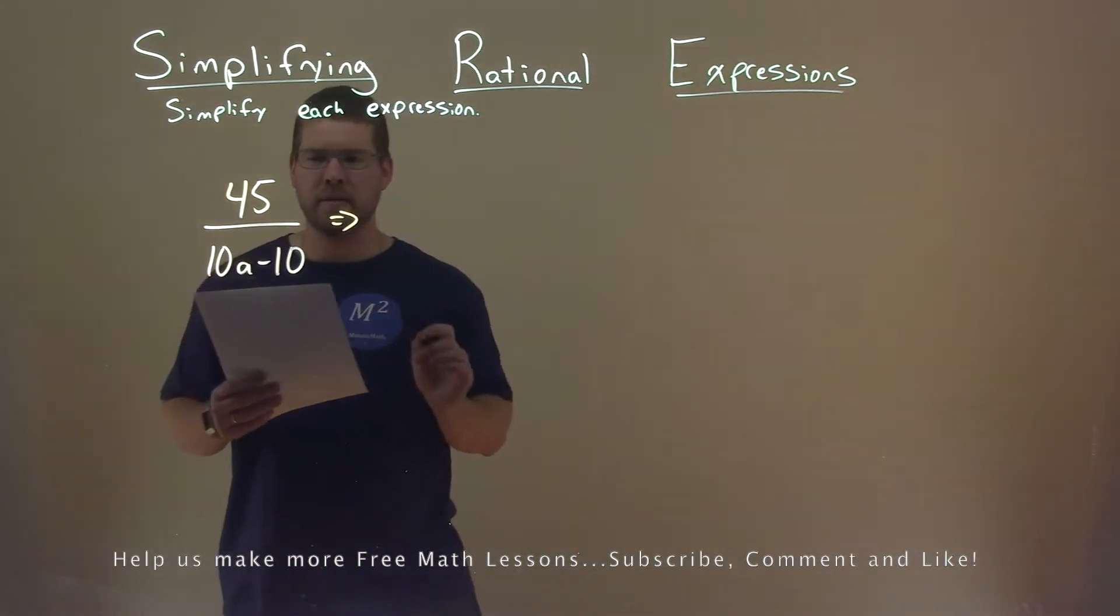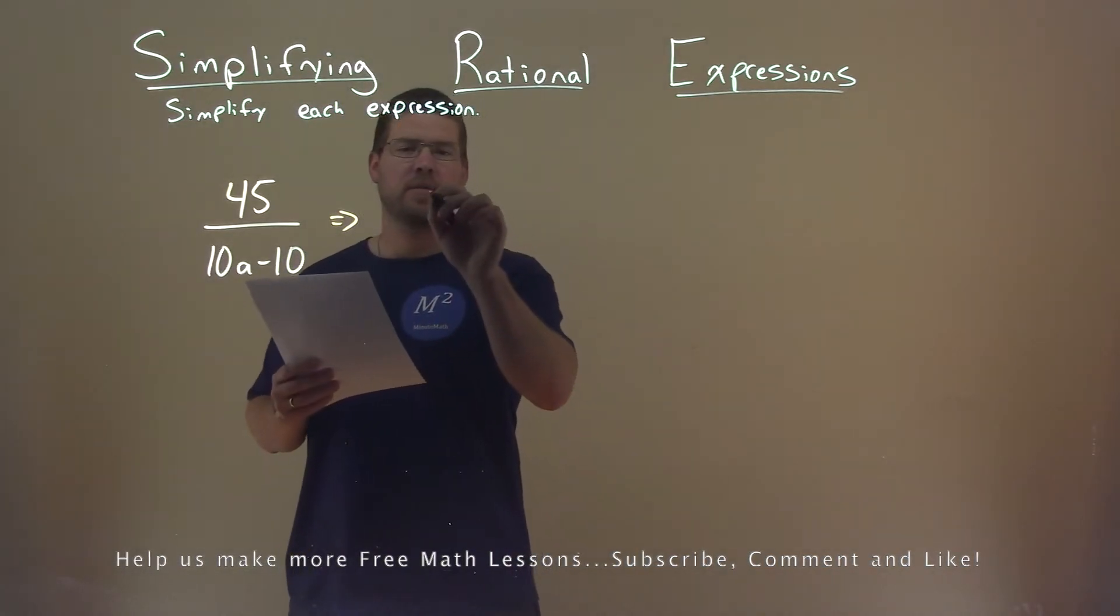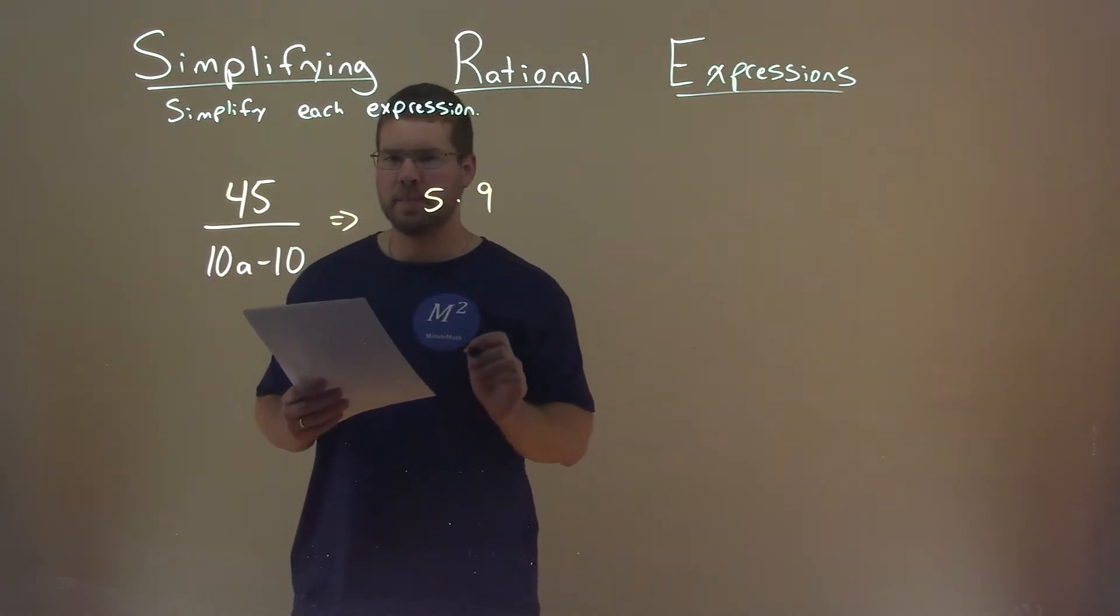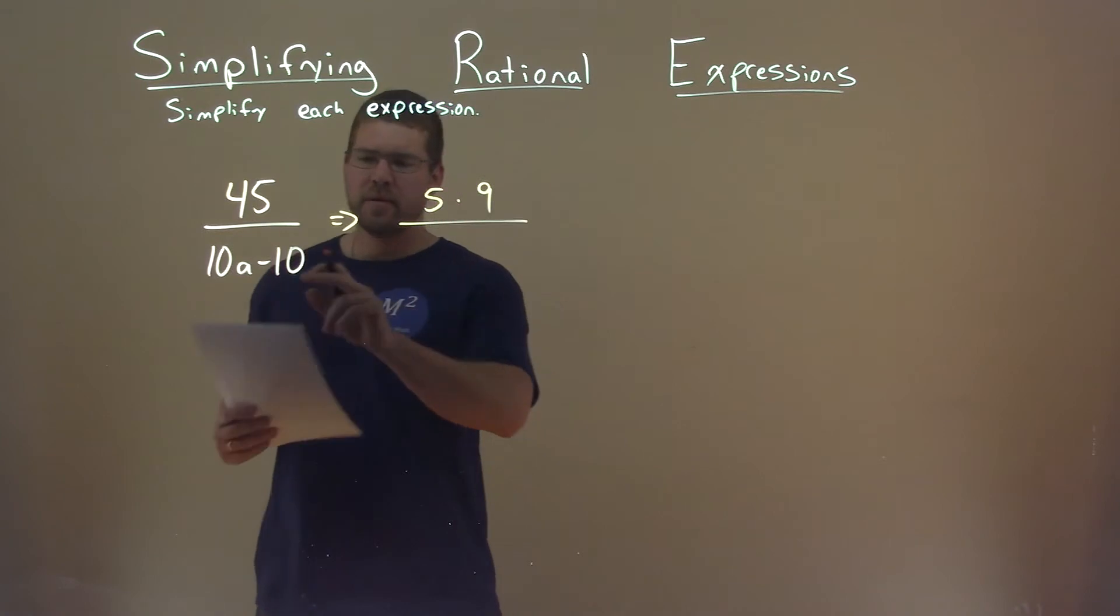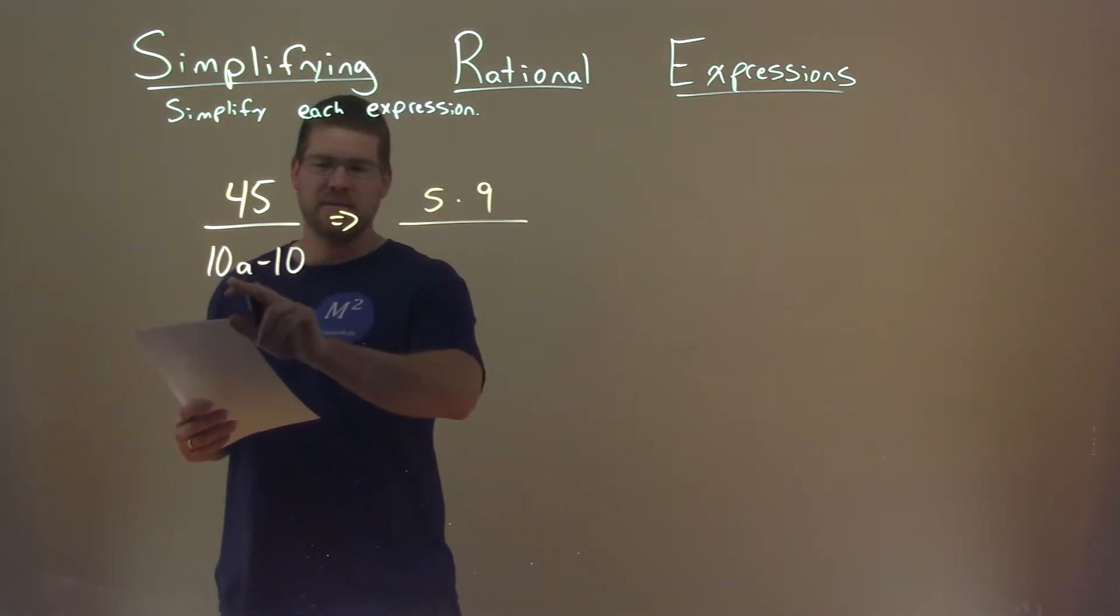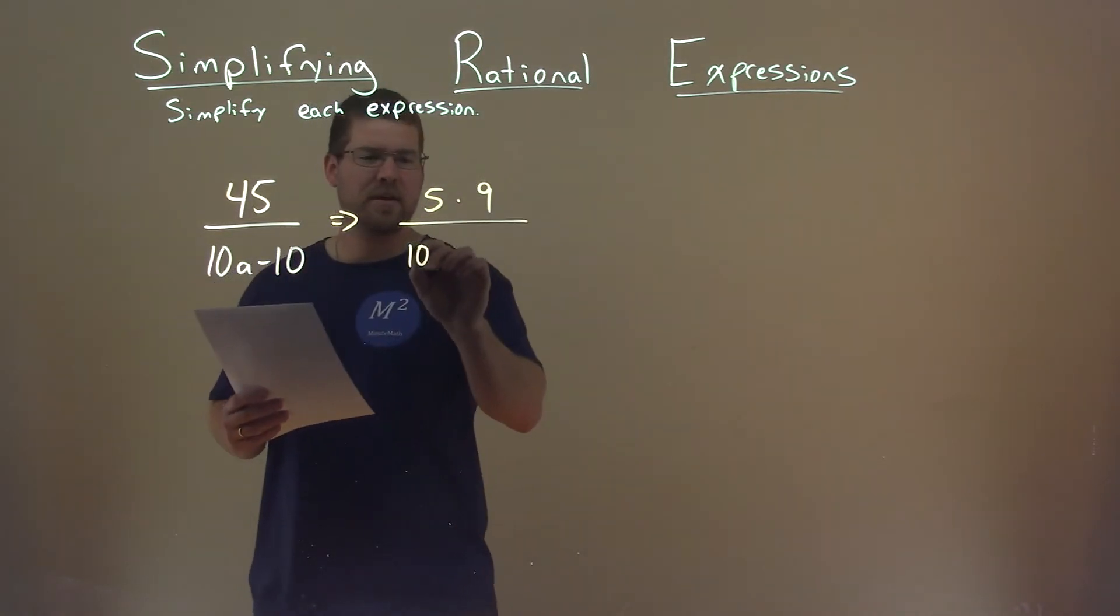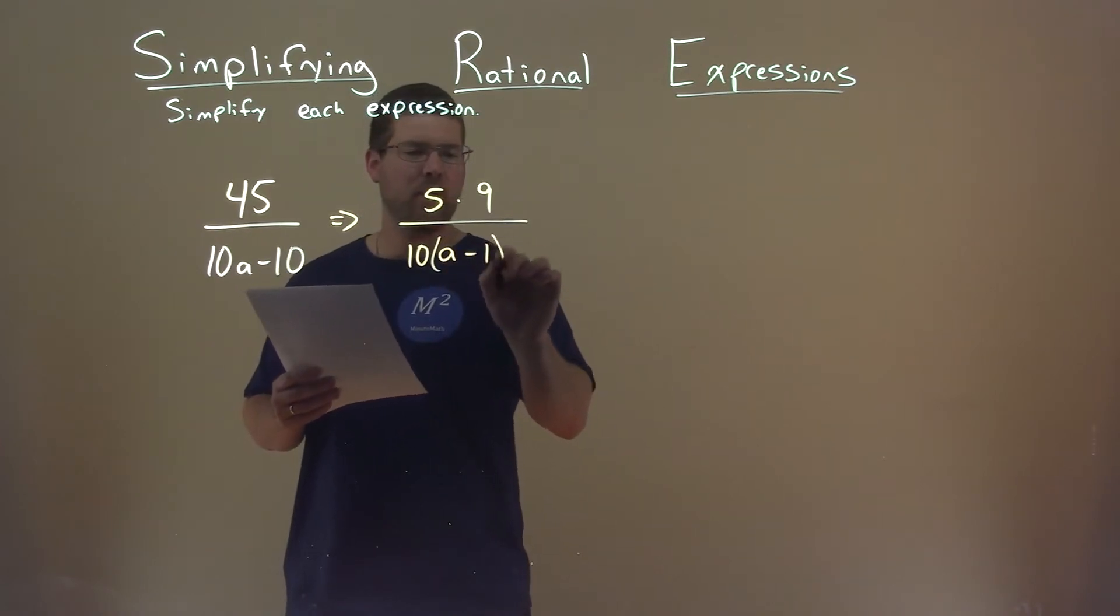Well, first thing I'm going to look at here is, 45 I know is 5 times 9. So I'm going to put that out here. The denominator, I can say I'm pulling out a 10, right? 10a and 10. So I'm going to put out a 10 here, and I'm left with an a minus 1.